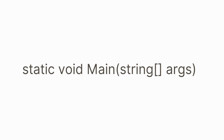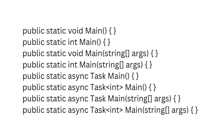Void: the main method does not return a value. Well, normally the main method can have an int, task, or task<int> return type. Here are the different signatures that the main method can have.